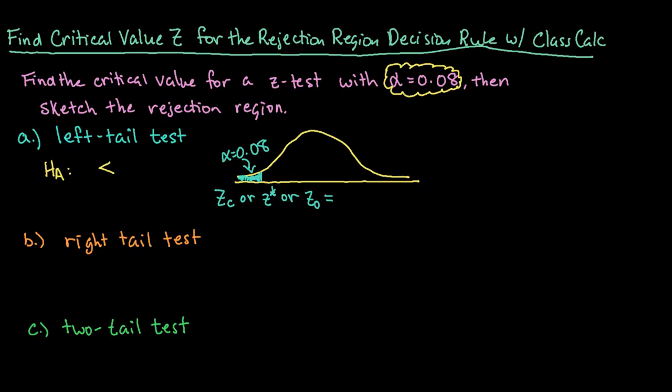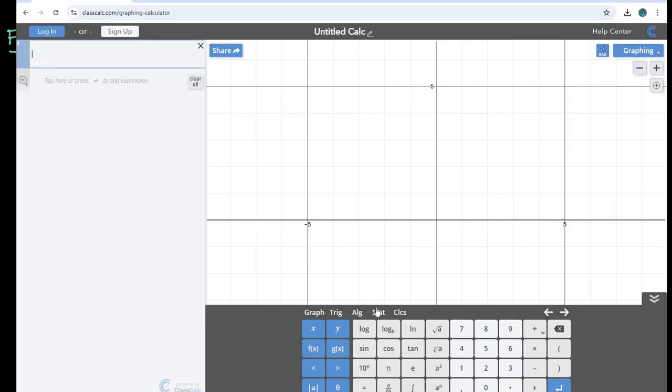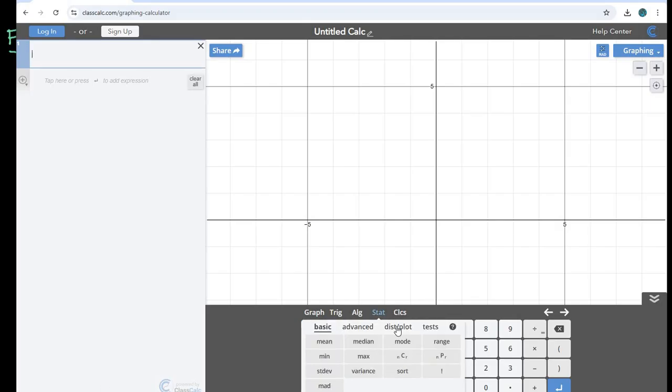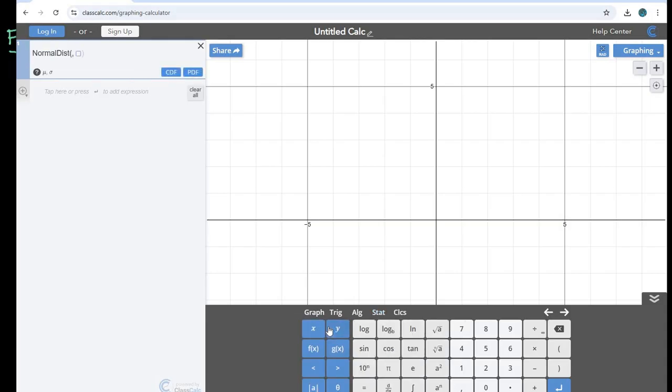Okay, so what we are going to do is we are going to grab class calc, and we're going to go into stat and the distribution plot. Since we are looking for a z score, we are using the normal distribution. And remember that in the normal distribution, the standard, the mean and the standard deviation for the standard normal distribution is zero and one. So whenever you are looking for a z score, you would use zero and one.